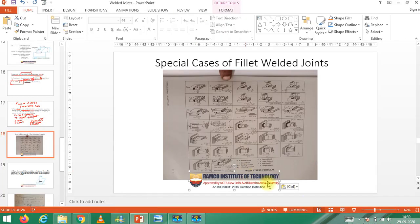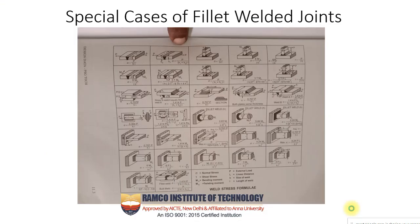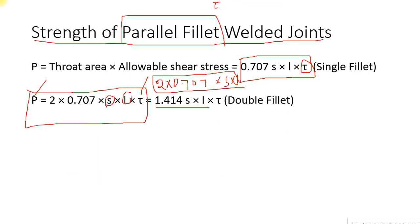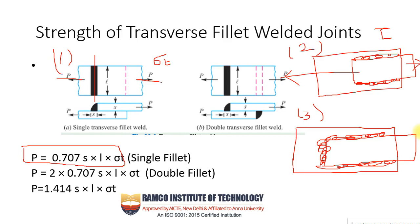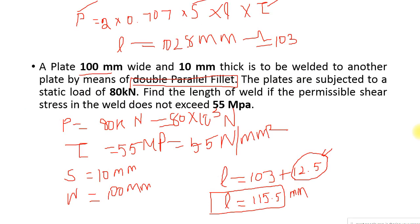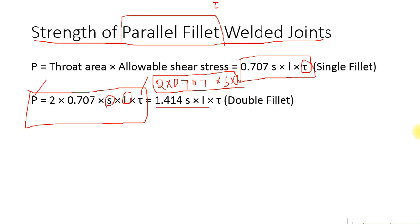To recollect what we have seen in our previous class, we started a new topic: welded joints and design of welded joints. Yesterday we discussed what welded joints are, what the welding process is, and the various types such as fillet joint, butt joint, and lap joint. We also solved a problem involving parallel fillet and transverse fillet, and I clearly explained the difference between them.